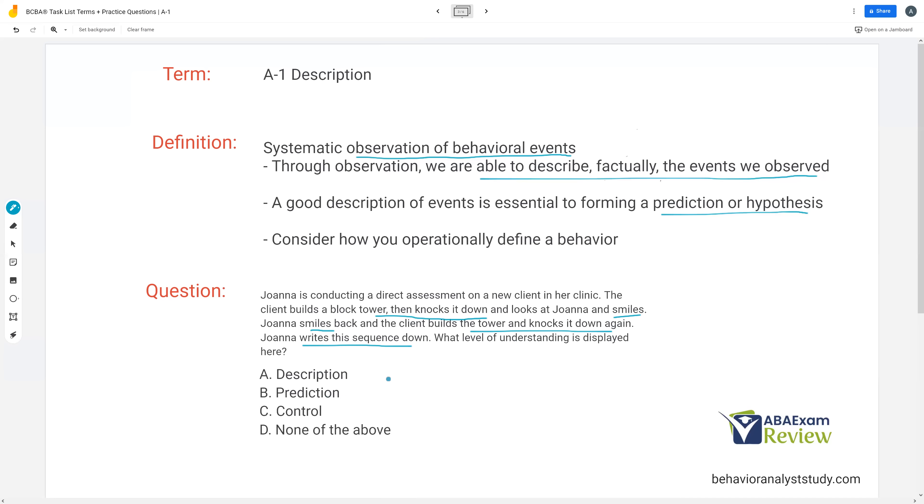So what level of understanding is displayed here? A, description. Yes. B, prediction. Well, we haven't made a prediction yet. Joanna's not trying to say why it's happening. She's simply writing it down. And then C, control. Control is going to be our highest level. If we're not manipulating anything, well, we can't demonstrate control. So what level of understanding is displayed here? A, description.